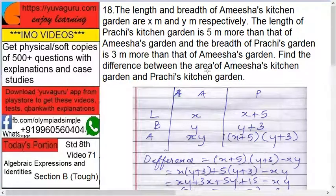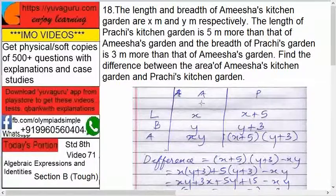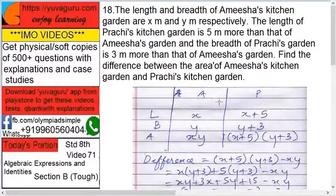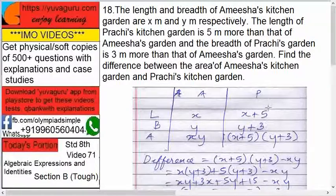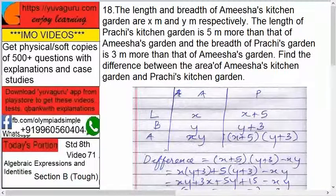Let's mark them as A and P. Length of A is x, length of B is y, so area of A is xy. For P, the length is x plus 5 and width is y plus 3, so area of P is (x+5)(y+3).